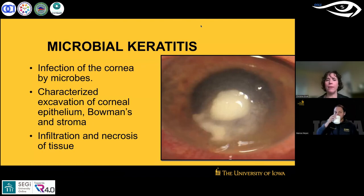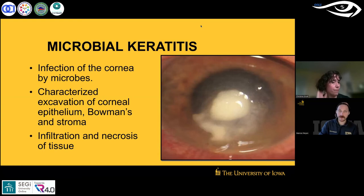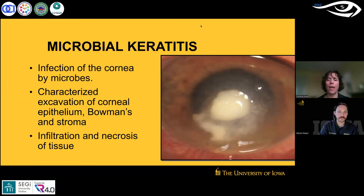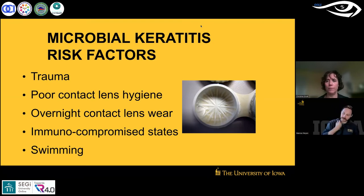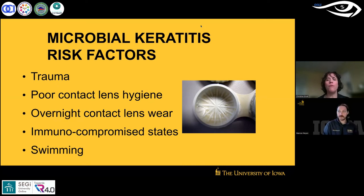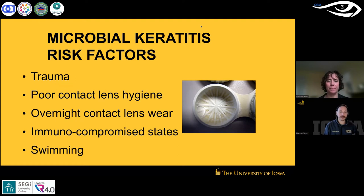Microbial keratitis is the big bad guy. It's an infection by microbes — infiltration and necrosis of tissue. Hopefully if this walked into your chair, you would know something is not right. It's actually pretty rare with scleral lenses. There's an ongoing study to determine the actual incidence, but anecdotally it seems much less than even soft lenses. The microbes often come from the solution dish the patient puts the lens in. Risk factors include trauma, something new introduced to the ocular surface, sleeping in lenses overnight, and swimming.